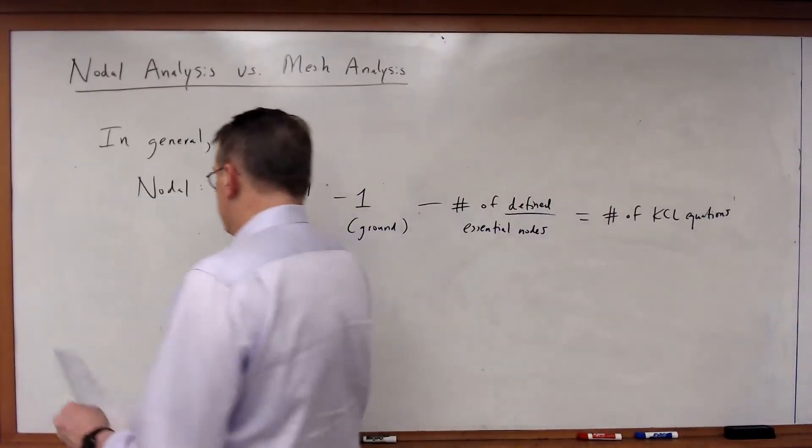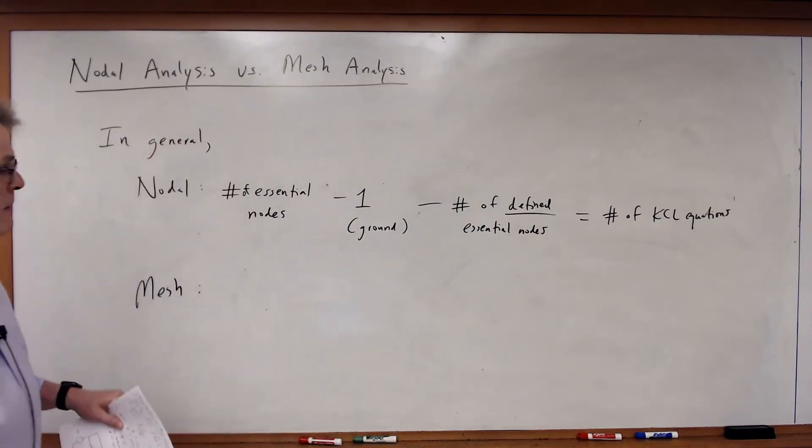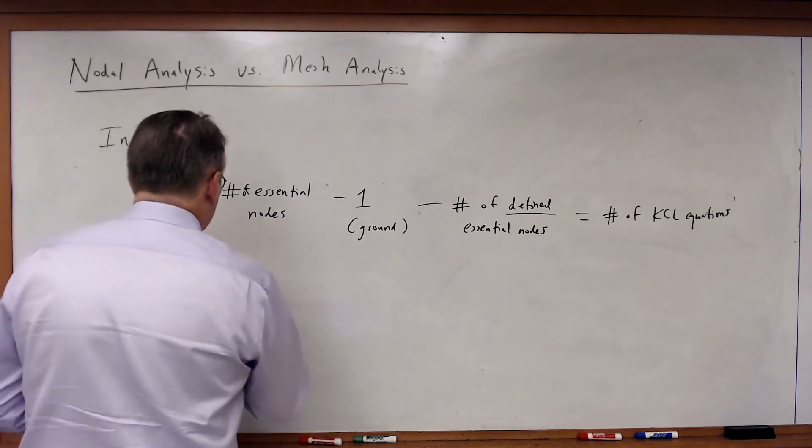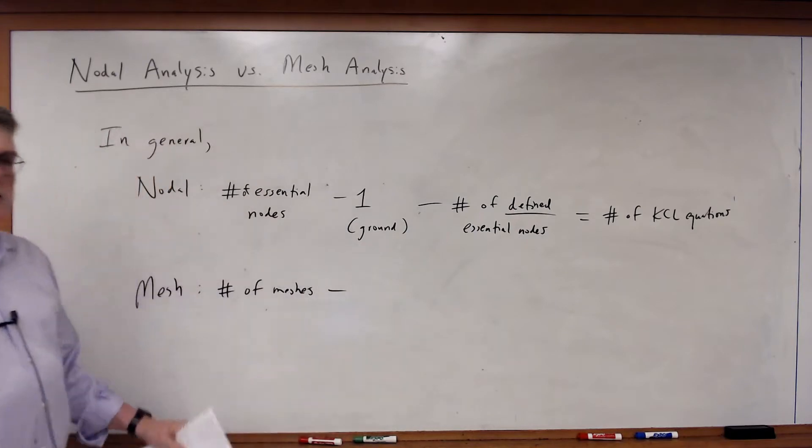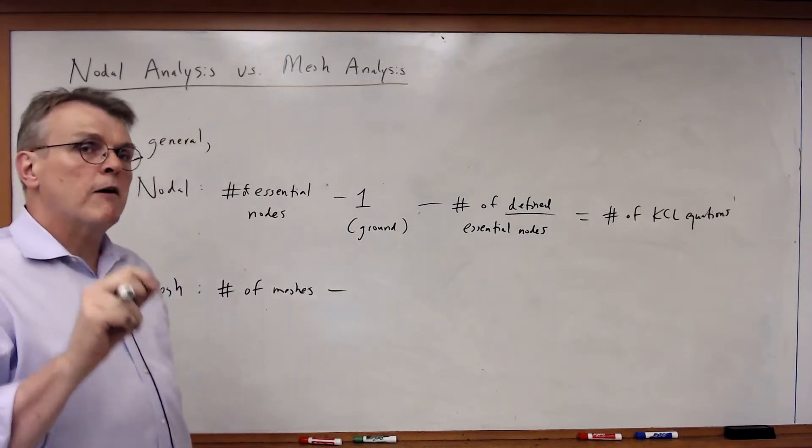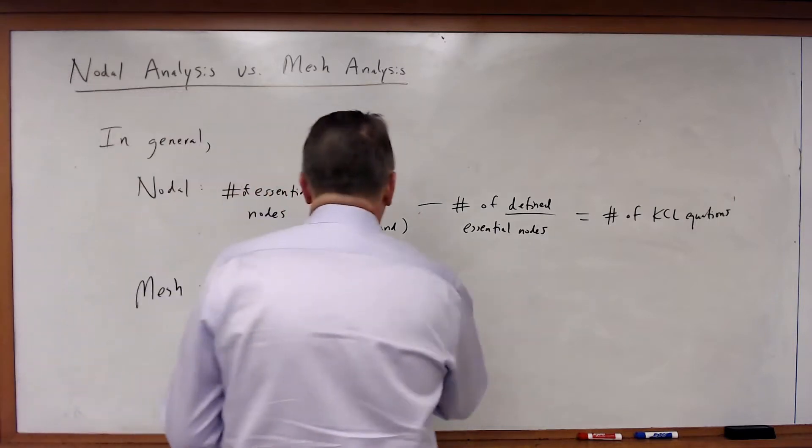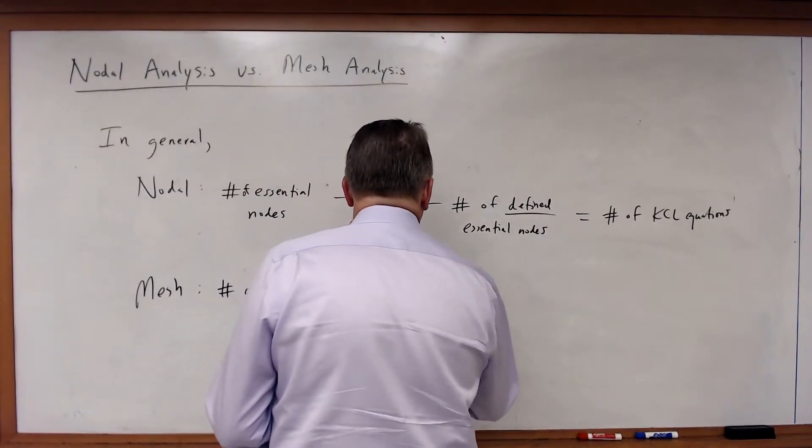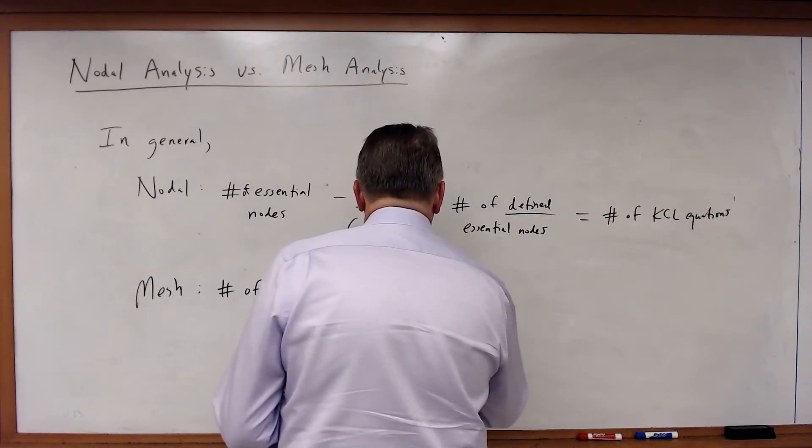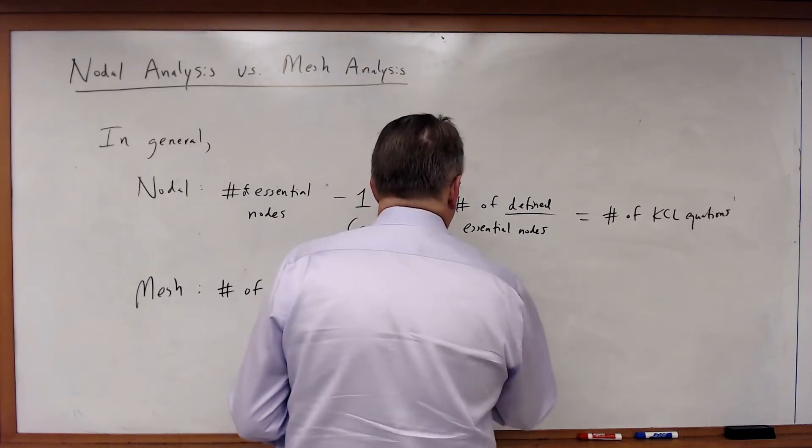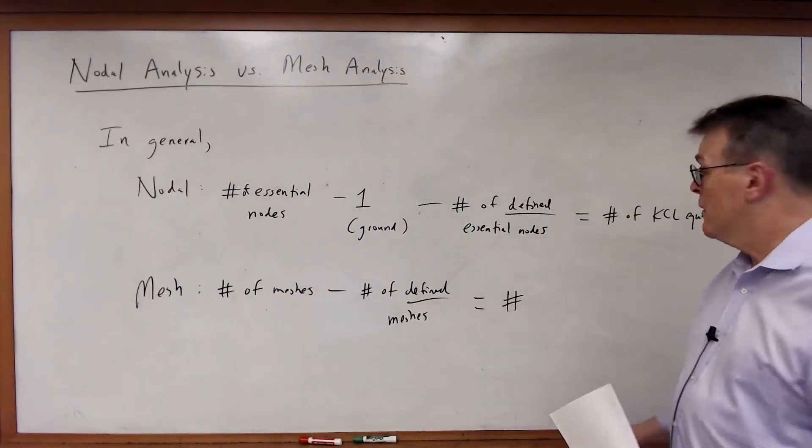And for mesh, what do you do? For mesh, you count the number of meshes and then you subtract the number of defined meshes due to a current source. And if you do that, you will have the number of KVL equations.